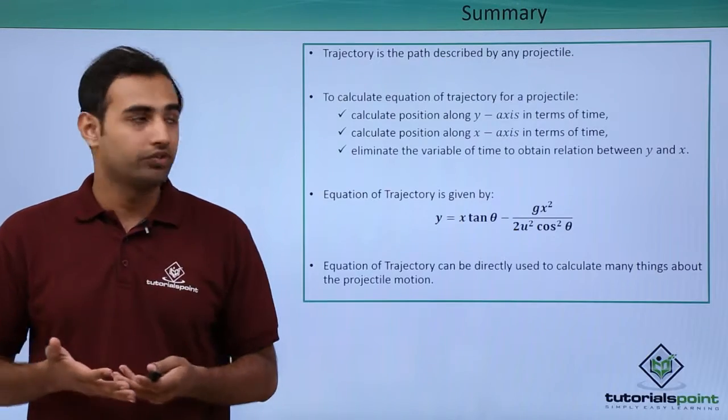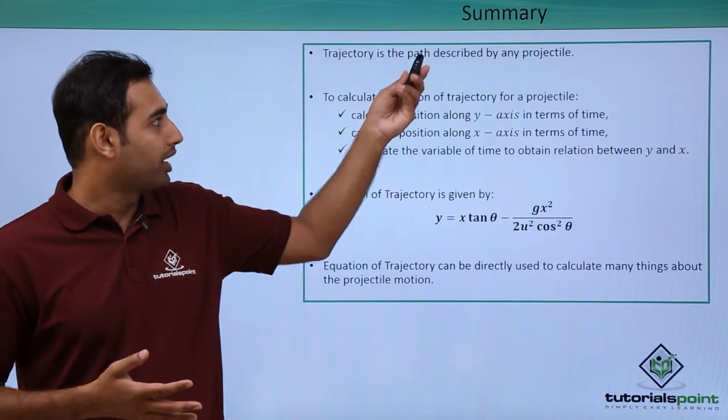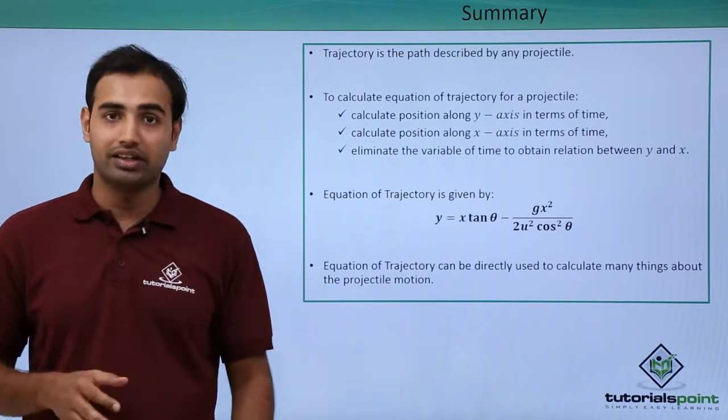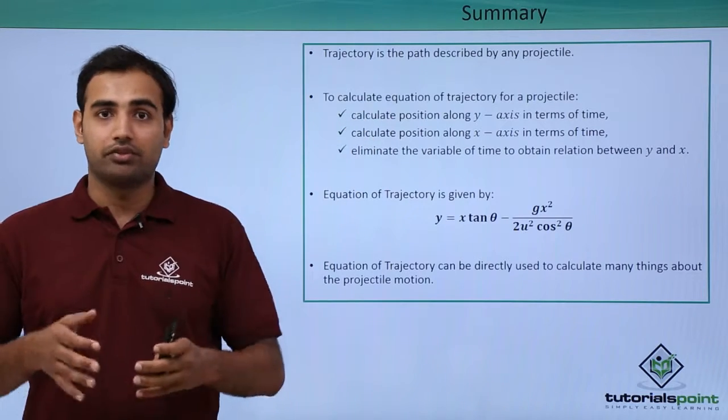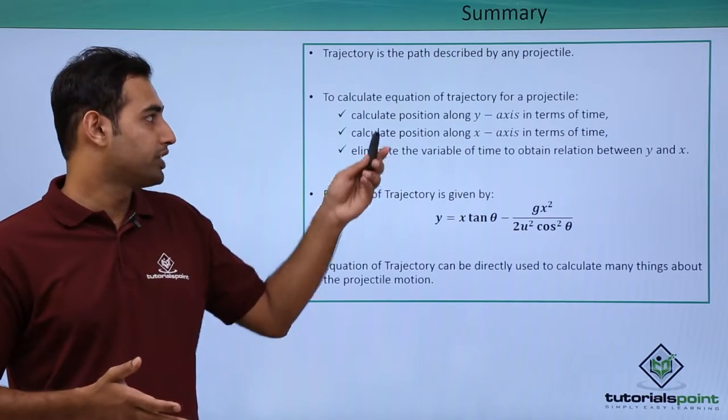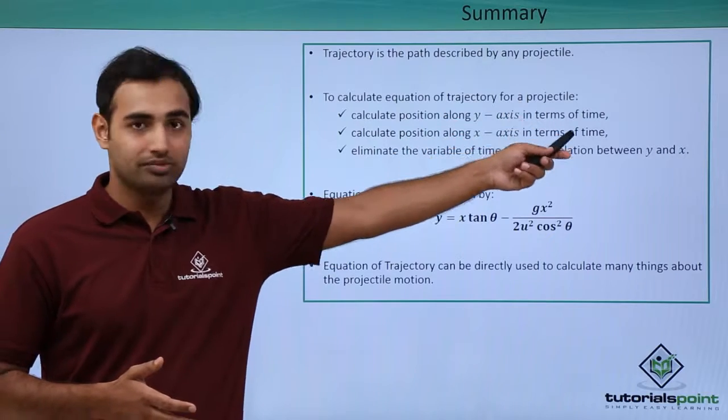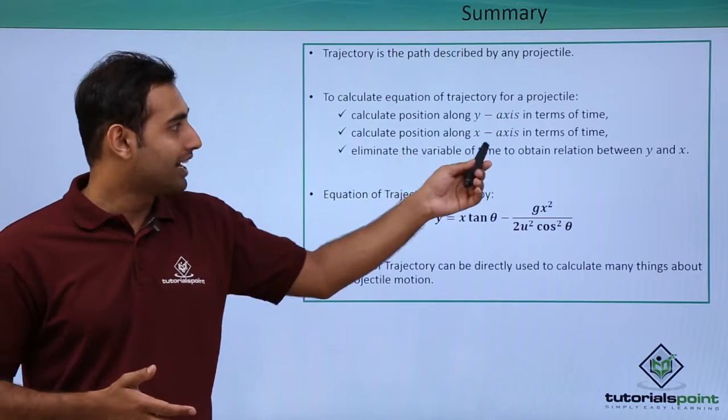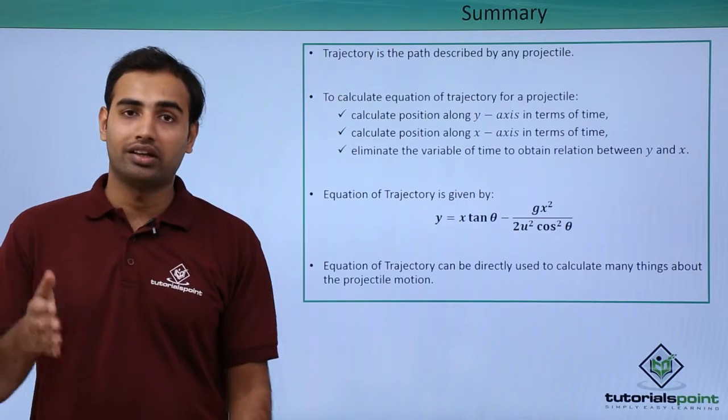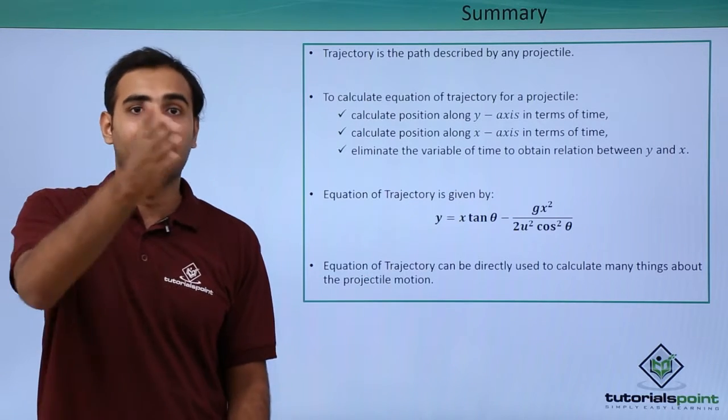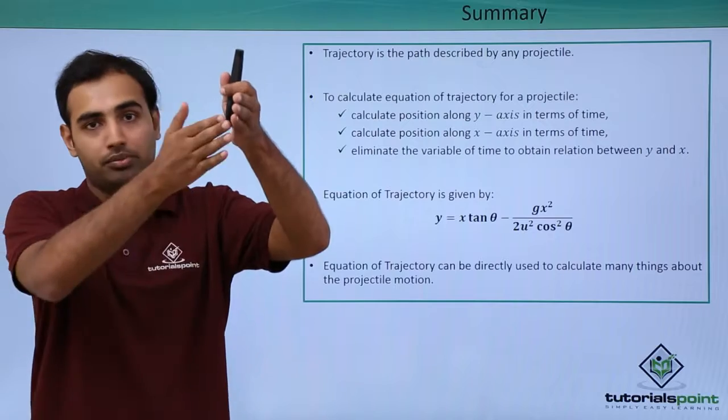So summarizing what we just learned, I can say that trajectory is a path described by any projectile in case of projectile motion. Now to calculate the equation of trajectory, what are the steps we have to do? We have to express positions along the y-axis in terms of time, positions along the x-axis in terms of time, and then ultimately eliminate time from them to obtain a relationship between y and x or positions along y with positions along x.